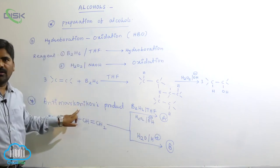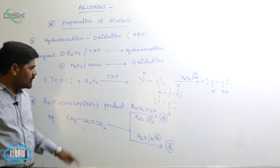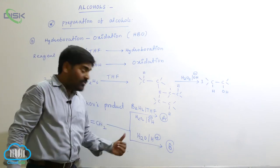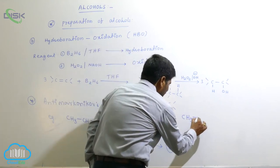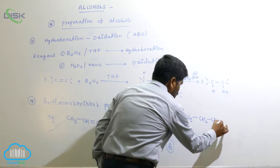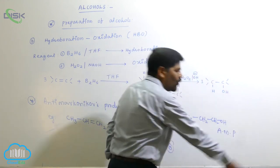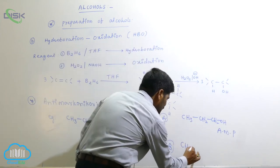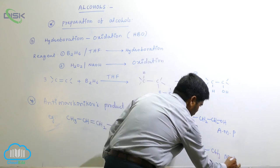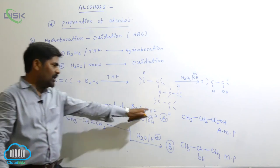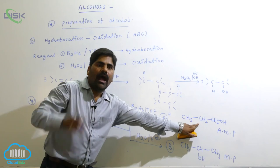A is the Anti-Markovnikov product, meaning a primary (one degree) alcohol is formed when using propene. Product A gives CH3-CH2-CH2OH — this is the Anti-Markovnikov product (AMP), n-propyl alcohol. Product B uses water in acid medium following Markovnikov's rule, giving CH3-CH(OH)-CH3 — this is the Markovnikov product (MP), isopropyl alcohol. Both products are different.